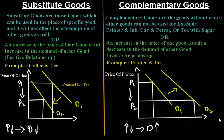As we can see in the graph, a decrease in the price of coffee from P1 to P2 results in a decrease in demand from D1 to D2. So there is a positive relationship between two substitute goods.